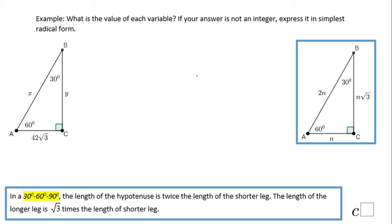Welcome back. In this example we need to find the variables x and y. You notice x is the hypotenuse of this right triangle and y is a leg. This right triangle is a special right triangle. We notice a 30-degree angle here, a 60, this is a 90-degree angle.